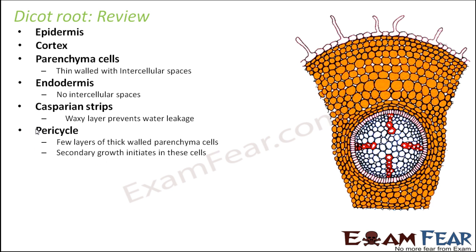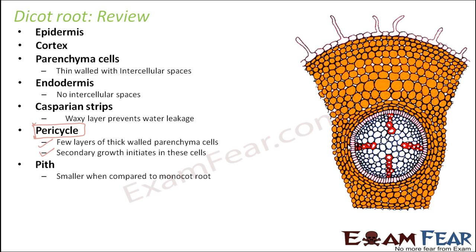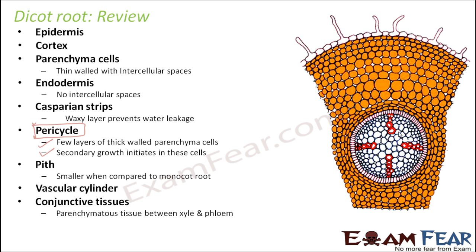Secondary growth initiates in the pericycle cells — this is very important in dicot root. A meristematic layer of tissue later develops in these pericycle parenchyma cells, which gives rise to secondary xylem and secondary phloem. That is why we say secondary growth is present in dicot roots. The pith is smaller compared to monocot root. The vascular cylinder comprises xylem, phloem, pith, and pericycle.